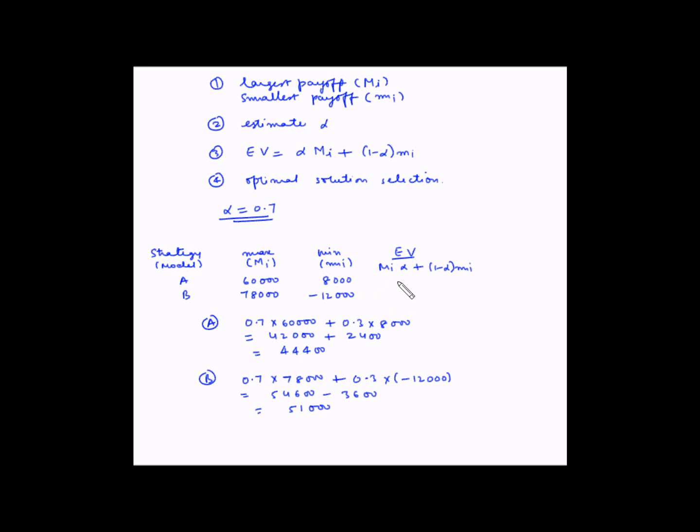So for model A, the expected value is 44,400 and for model B it is 51,000. Based on the Hurwicz alpha criteria, since the expected value of model B is higher than model A, we choose model B as the final solution.